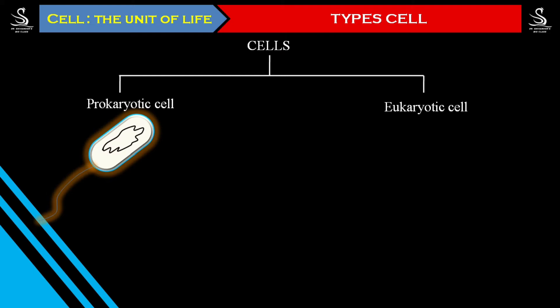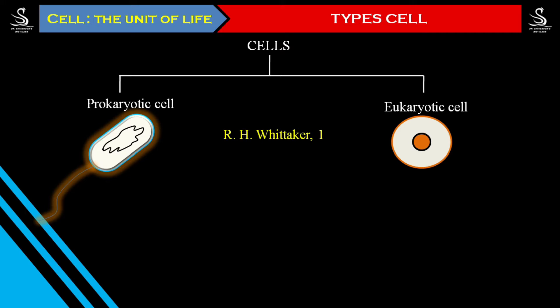In prokaryotes there is no nuclear envelope — DNA is simply present inside the cytoplasm. But in eukaryotes, DNA is enclosed inside the nucleus.